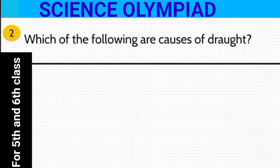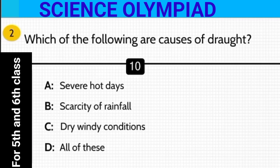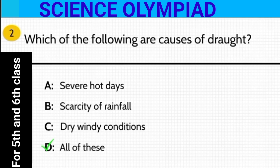Next question: Which of the following are causes of drought? Is it severe hot days, scarcity of rainfall, dry windy conditions, or all of these? The answer is option D — all of these. They are all causes of drought.